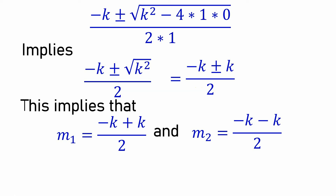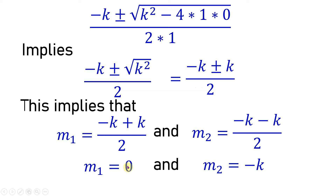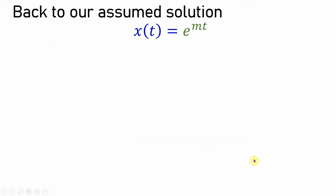We have the plus-or-minus giving two values: m₁ = (−k + k)/2 = 0/2 = 0, and m₂ = (−k − k)/2 = −2k/2 = −k. Now we go back to our assumed solution e^(mt).